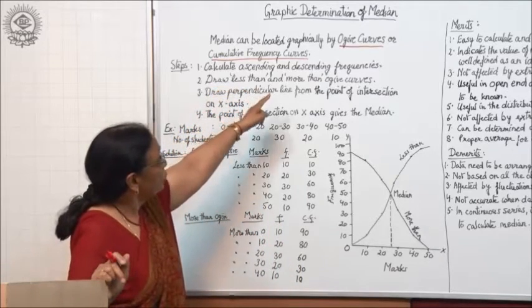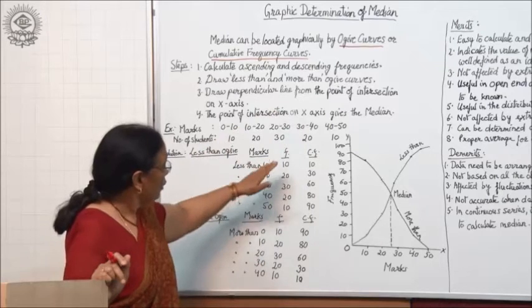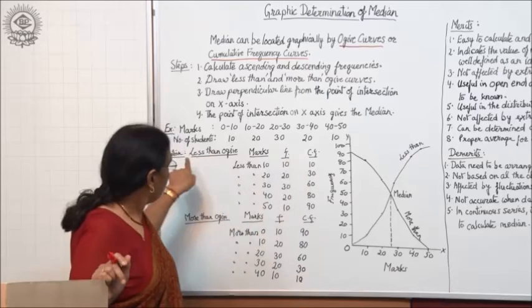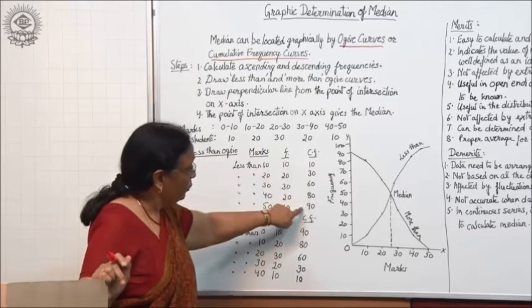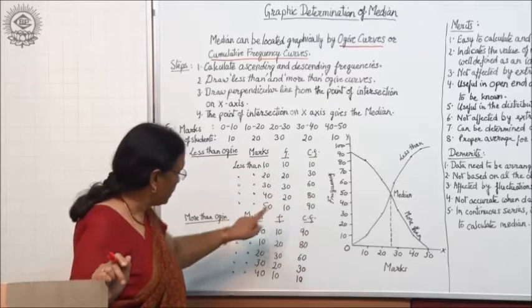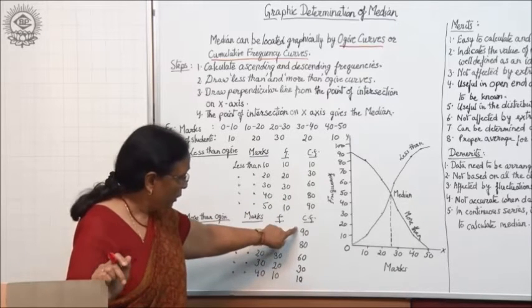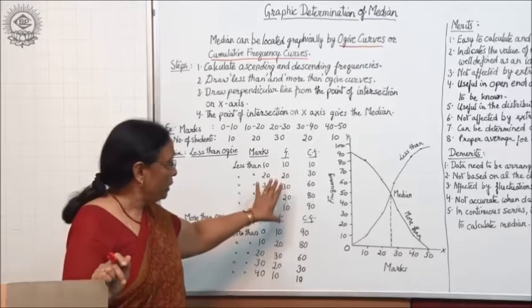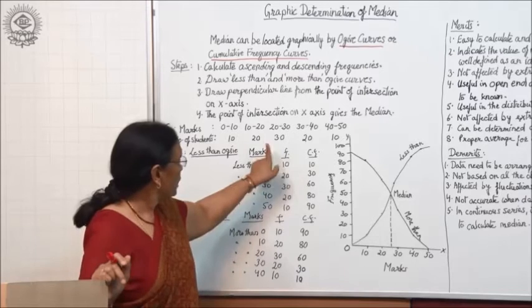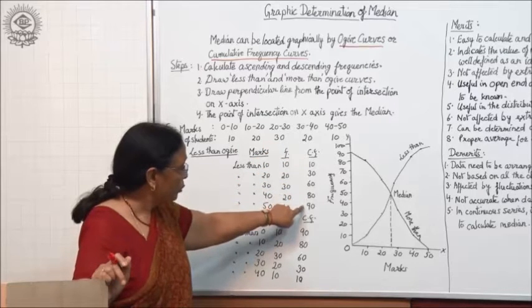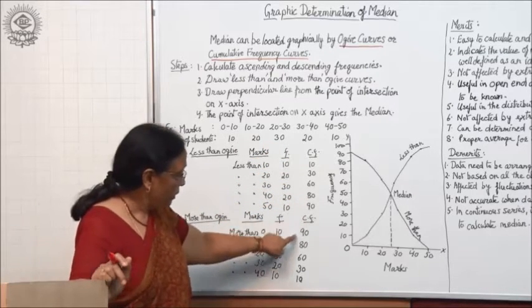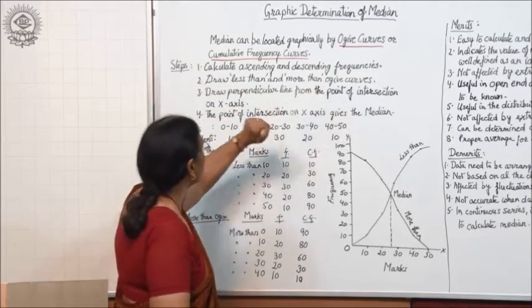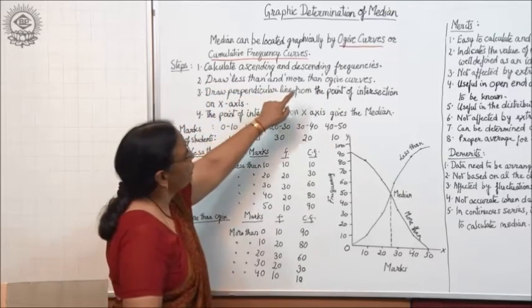The second step is to draw less-than and more-than ogive curves. In the less-than ogive, you make the cumulative frequency in ascending order. In the more-than ogive, you arrange the cumulative frequency in descending order. So: calculate ascending and descending frequencies, then draw less-than and more-than ogive curves.